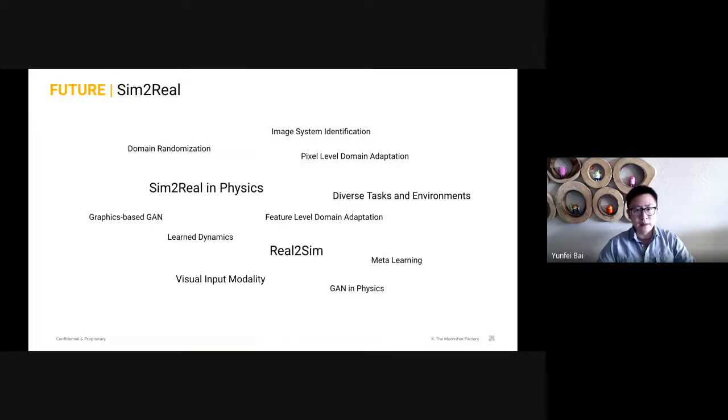But note that sim-to-real is a very large space, and it is still an open problem in the robotics community. Here, I listed some keywords and techniques that are worth looking into in the future. For example, today we talked about sim-to-real in the visual domain, and we need more advance in sim-to-real in the physics space. We also need to solve real-to-sim. And at the same time, we also need to come up with techniques that can work in diverse tasks and environments.